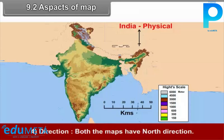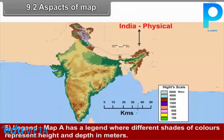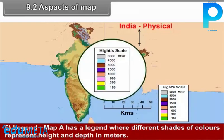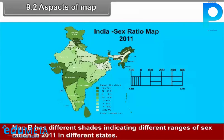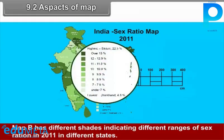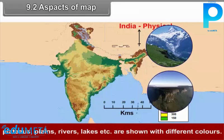4. Direction: Both maps have north direction indicated. 5. Legend: Map A has a legend where different shades of colors represent height and depth in meters. Map B has different shades indicating different ranges of sex ratio in 2011 in different states. 6. Theme: Map A is a physical map of India where physical features such as mountains, plateaus, plains, rivers, lakes, etc. are shown with different colors.